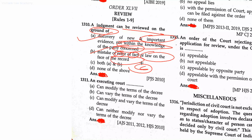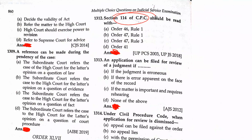The executing court cannot modify or vary the terms of the decree. Section 114 of the CPC should be read with its history.